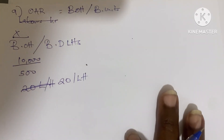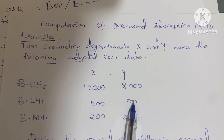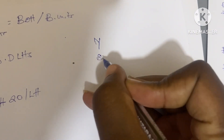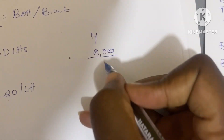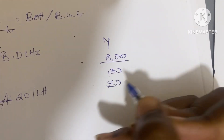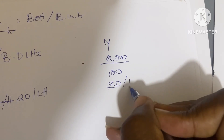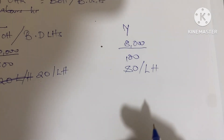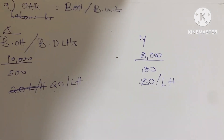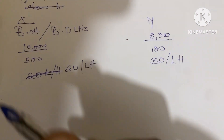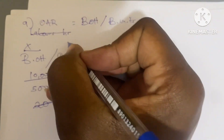For department Y, which also uses labor hours in the budget, it will be 8,000 divided by 100, giving a rate of 80 per labor hour. So every hour that Y works, the rate is 80 shillings.